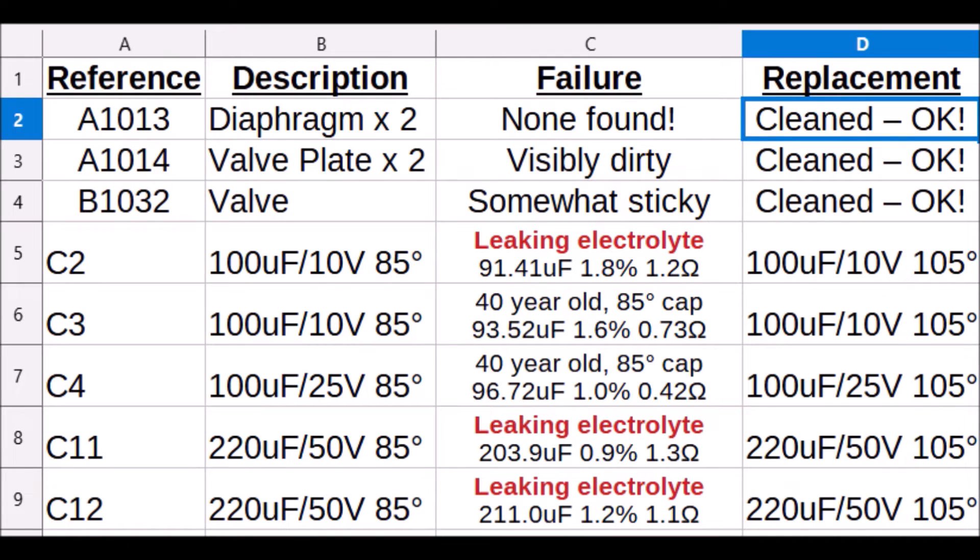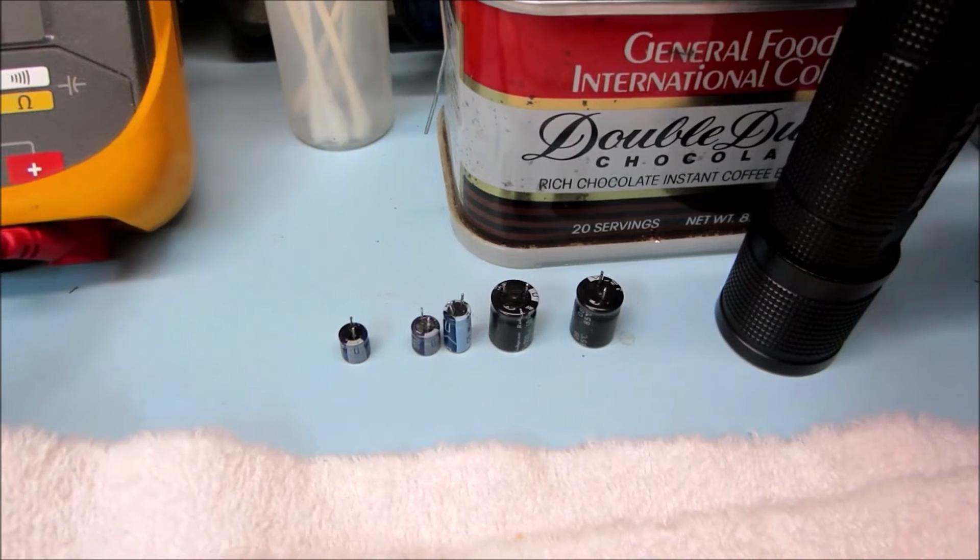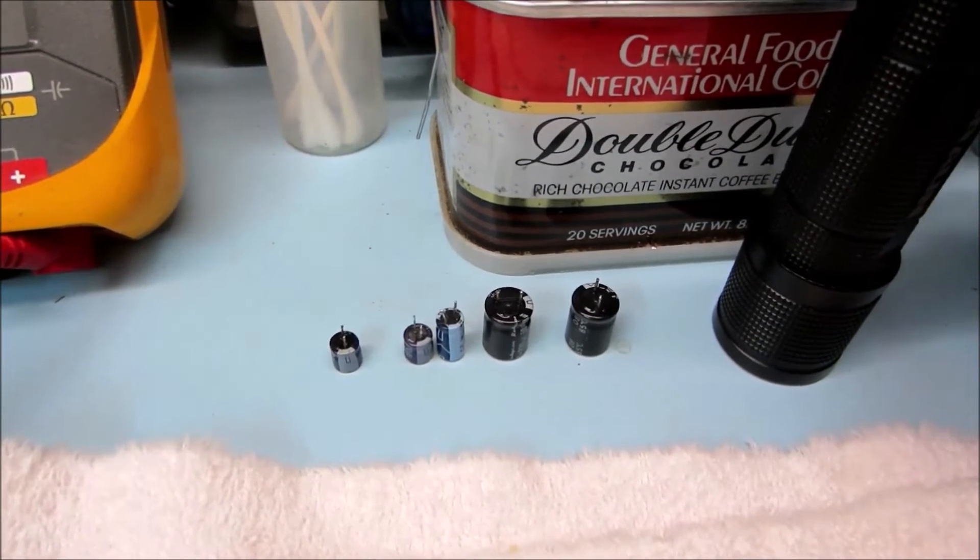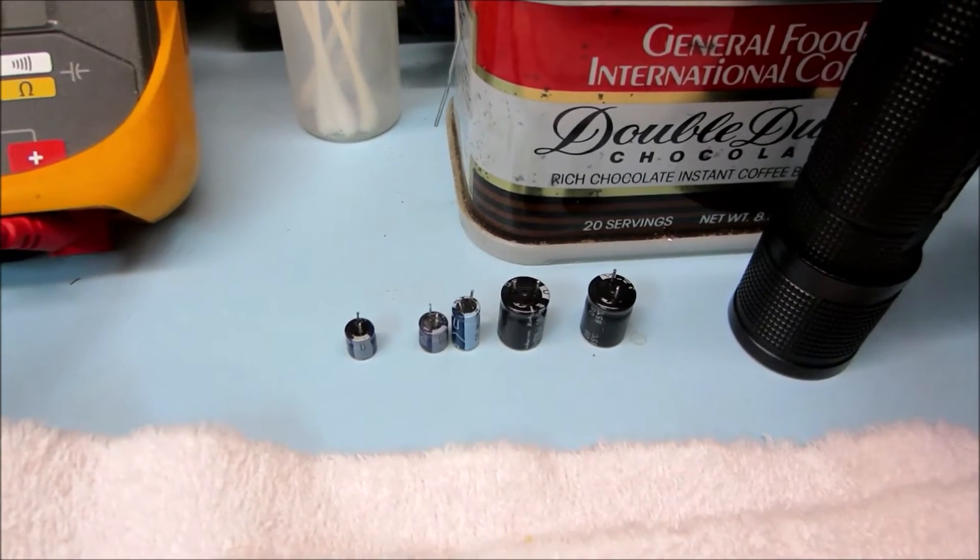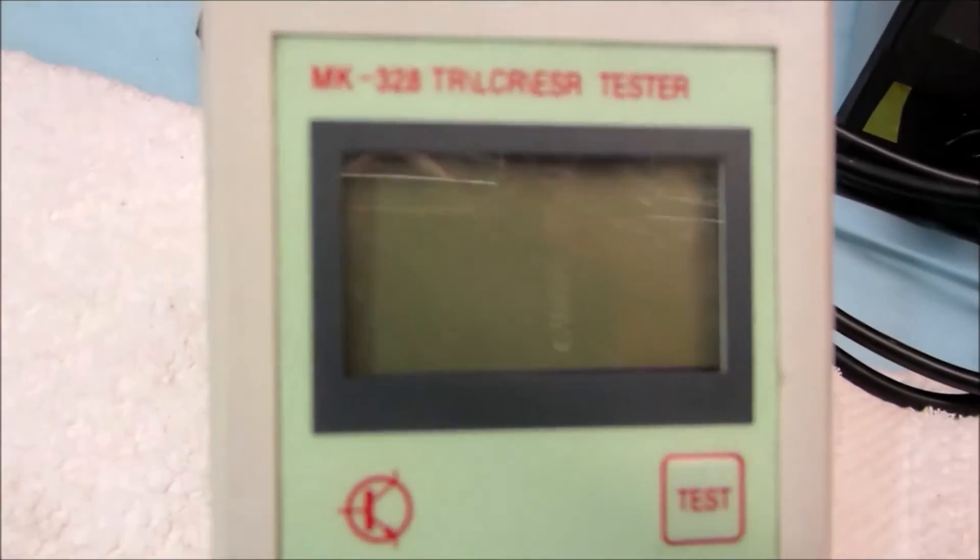So here's a list of everything that we've done so far. We've replaced three parts that we didn't need to replace, about $60 spent unnecessarily. And we replaced five caps that we already had in stock. Now here's the interesting thing. None of the five components that we replaced check bad. We're going to prove that using this very nice MK328 component tester.